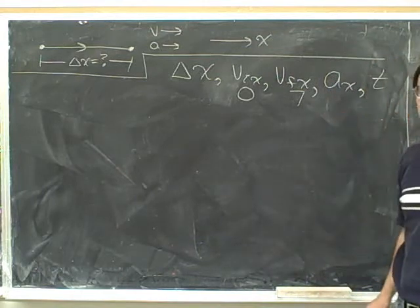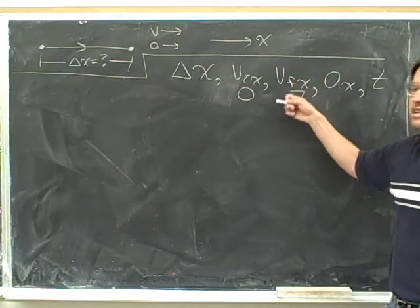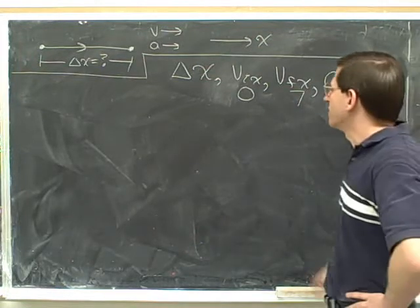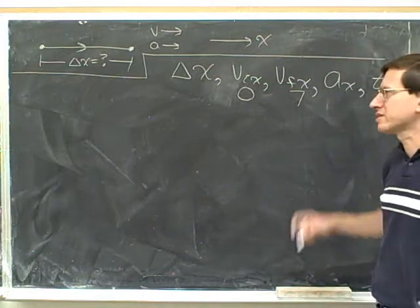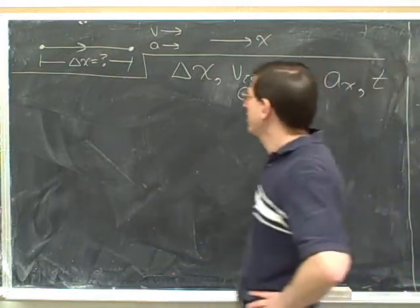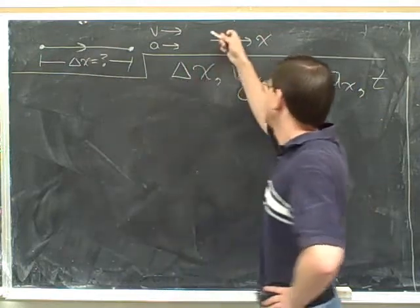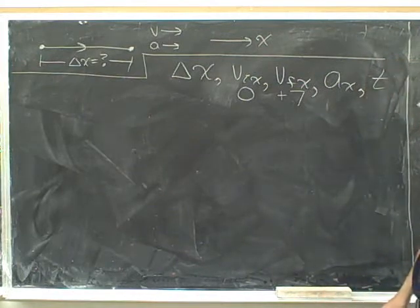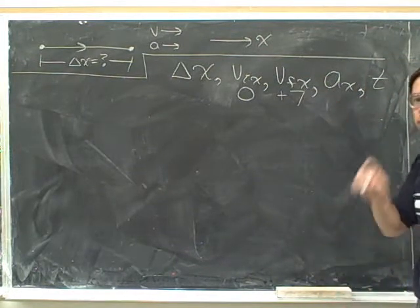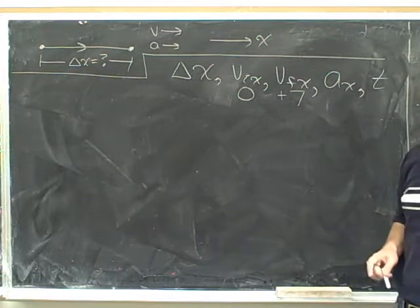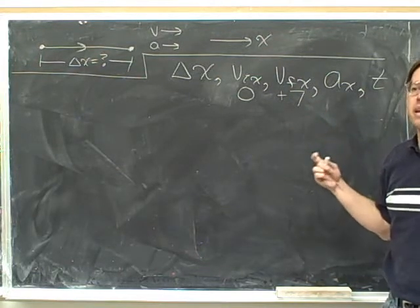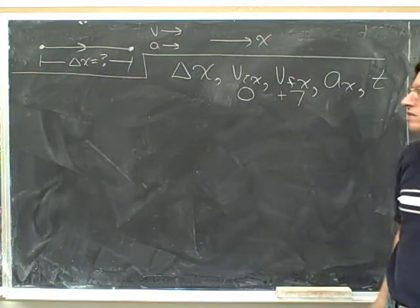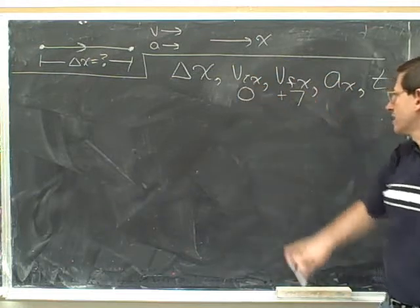What I wrote down on the board should make you feel very uncomfortable — we never want to write down a velocity without a sign. They didn't actually give you the sign in the problem, so we have to pick the sign that makes sense. We decided to imagine we're moving to the right, and rightward is our positive direction, so the velocity should be positive. If you did this whole problem but didn't include this positive sign, you're not really learning the method, and you're setting yourself up for mistakes on harder problems. Always include the signs for velocity, acceleration, and displacement.